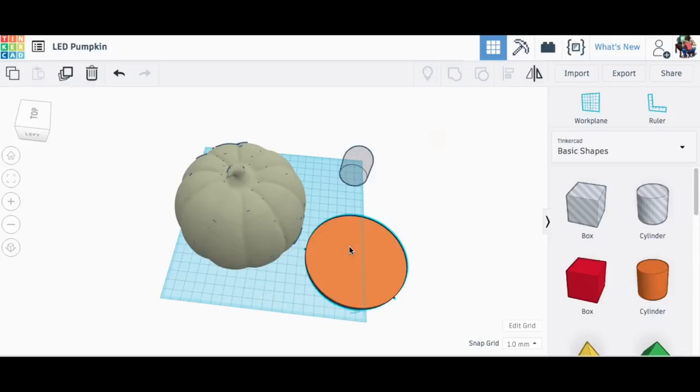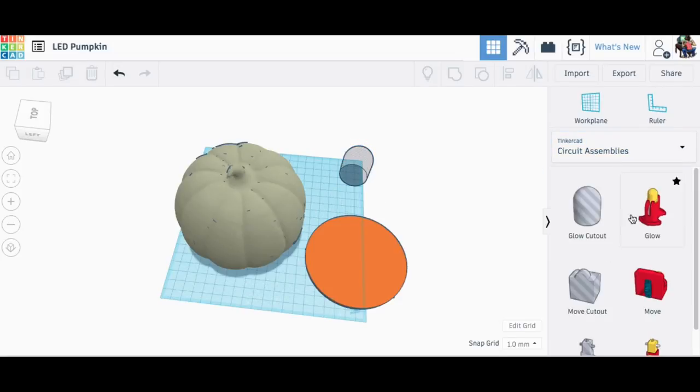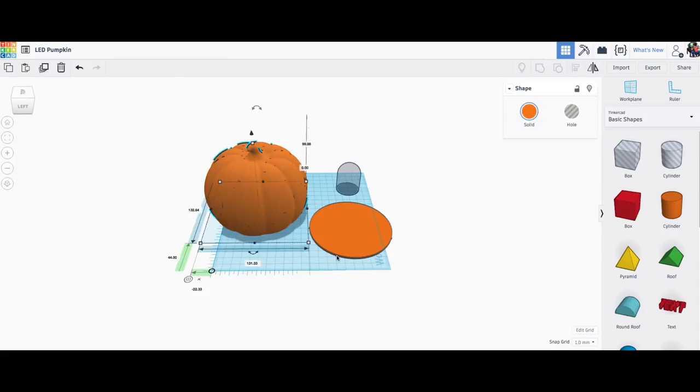So I wanted to fill that in so I brought it into Tinkercad and I used a cylinder to make a round disc for the bottom, and then here's an insert for the LED. Now this is a circuit assembly within Tinkercad so it's an LED and battery, and this glow cutout is what I'm going to use to make that fit.